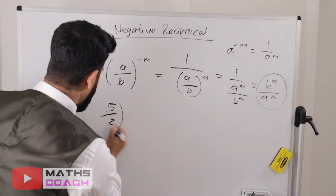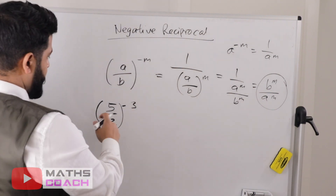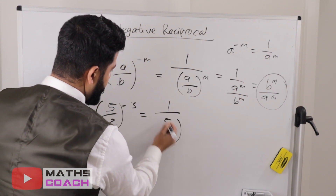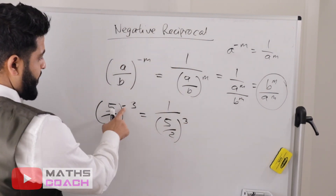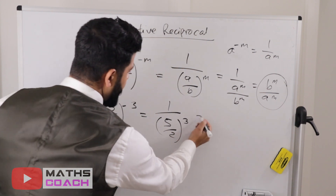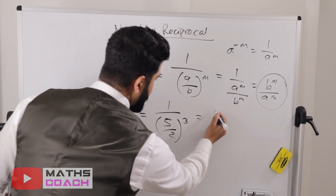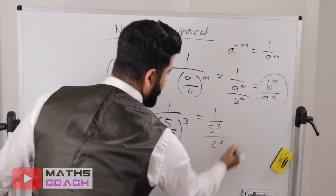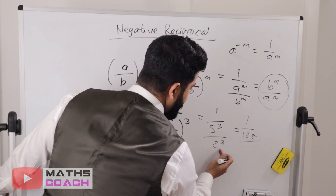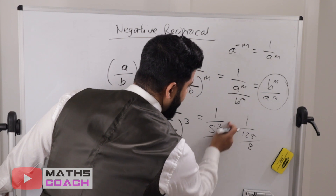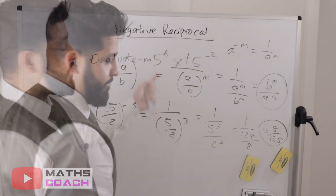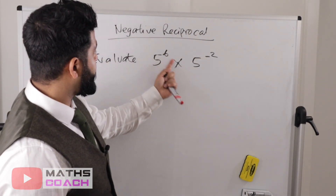Another example: 5 over 2 to the power of minus 3. This becomes 1 over 5 over 2 cubed. The power of 3 applies to both: 5 cubed over 2 cubed. That gives 125 over 8. The 8 multiplies to the top, giving 8 over 125 as the final answer.